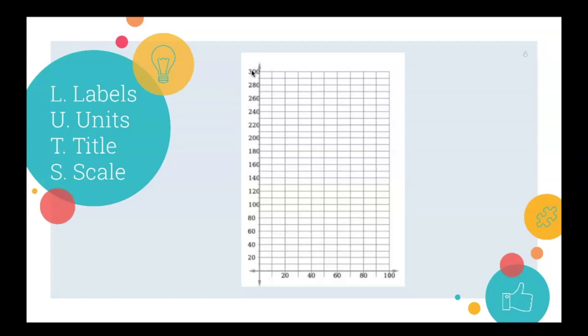After students have graphed both data sets, you can have conversations about if they intersect anywhere and if so, what is the ordered pair for that point. You can also discuss why Gennaro's graph may be steeper than Jenny's graph.